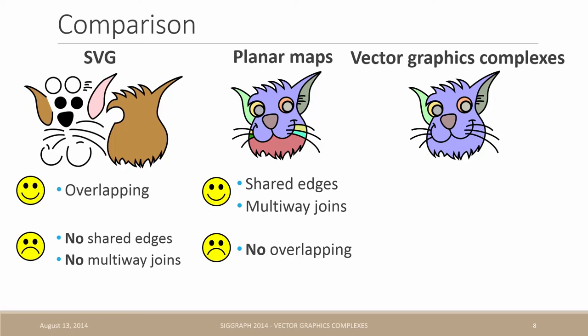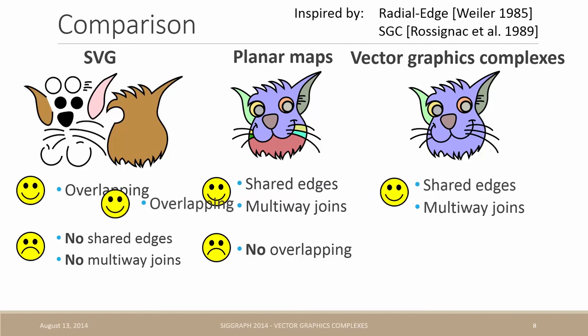In our paper, we introduced vector graphics complexes. It is a novel representation inspired by the structures traditionally used for 3D topological modeling, such as a radial edge or the selective geometric complex. It shares all the benefits of planar maps, but without sacrificing the overlapping feature.